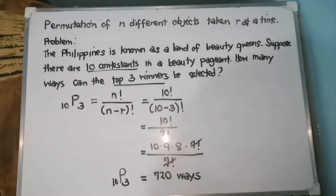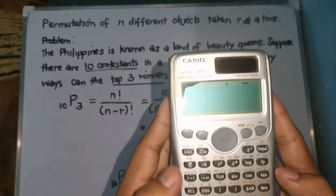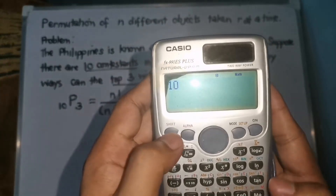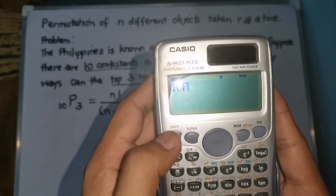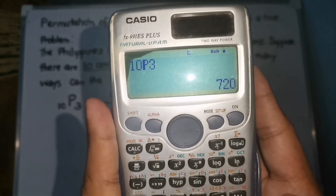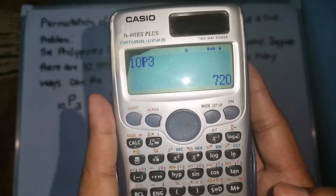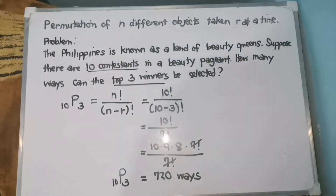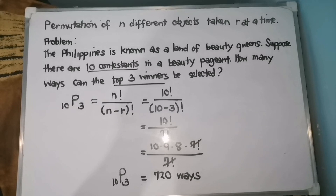Let us check using our scientific calculator. Enter 10, Shift NPR, then 3, and press equals to confirm. I hope you learned something today about permutation of N different objects taken R at a time. Don't forget to share this video with others, give it a thumbs up, and thank you for watching.